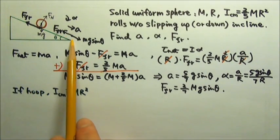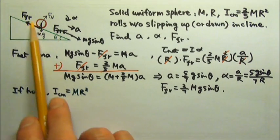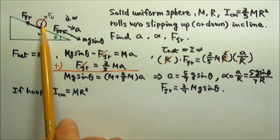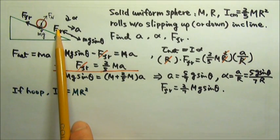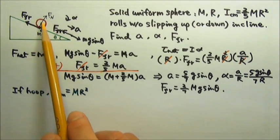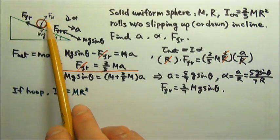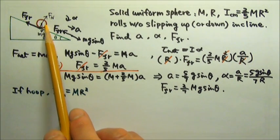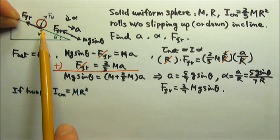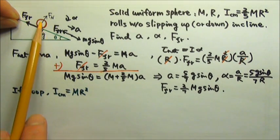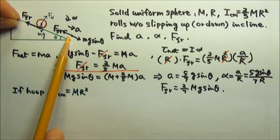Suppose this incline is slippery, no friction, and we still want the sphere to be able to roll up and down the incline without slipping. What we can do is we can wrap a string around the sphere so that the string does not slip, and then hold the string over here. And then you can make this object roll up and down without slipping.